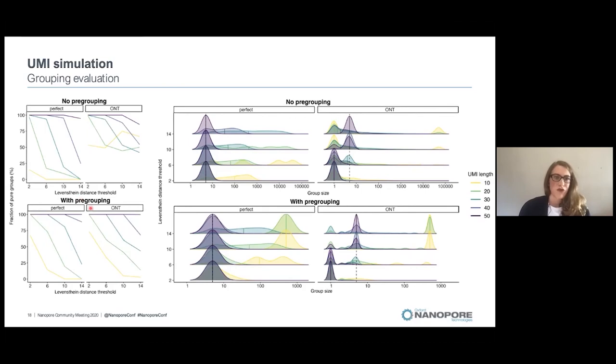With pre-grouping, we can get around this problem with having 40 nucleotide UMI.